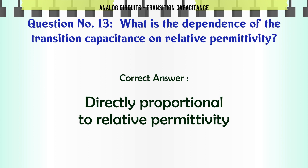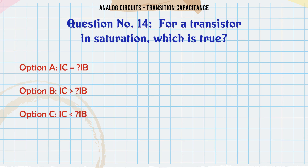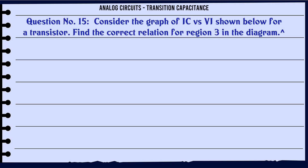For a transistor in saturation, which is true? A: Ic = IB, B: Ic < IB, C: Ic > IB, D: Ic ≥ IB. The correct answer is Ic < β·IB.